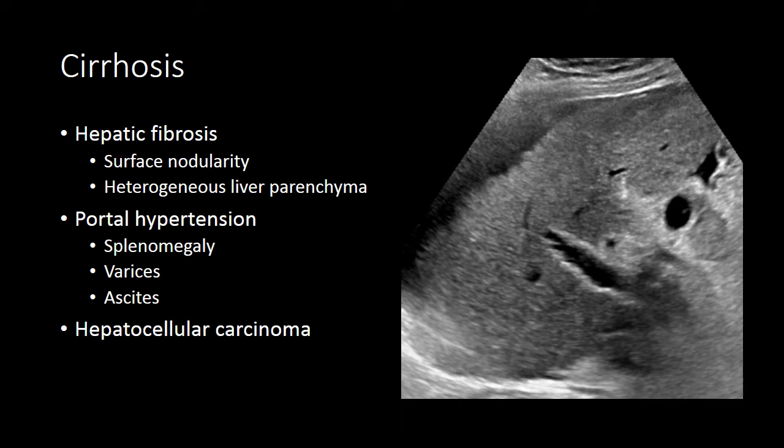That portal hypertension will manifest on imaging as splenomegaly, the development of varices, and ascites. Cirrhosis is also the primary risk factor for the development of hepatocellular carcinoma.